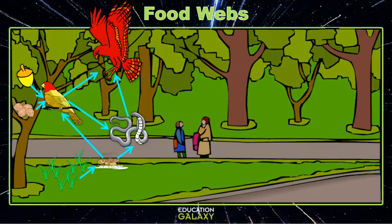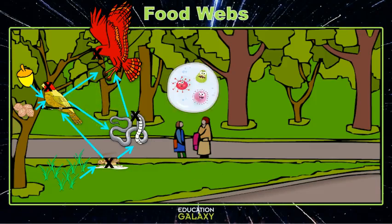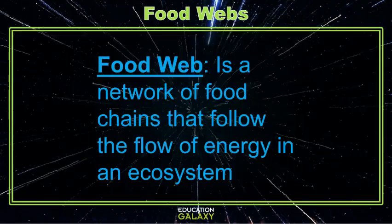But even more, when these animals all die, some decomposers will come in — bacteria, worms, and fungi — that will start to break them down. Now what we've made is a food web. A food web is a network of food chains that follow the flow of energy in an ecosystem.